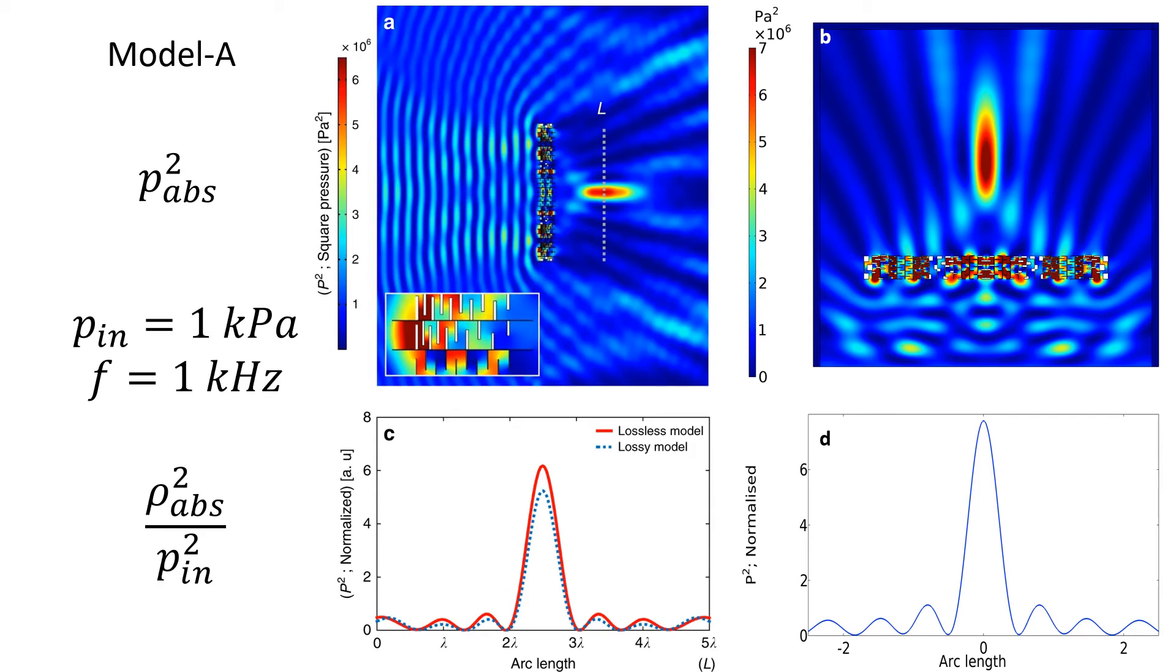The fluctuation of absolute pressure squared, normalized by the square of the input pressure, was probed along the cut line located at two wavelengths away. The pressure at the focal point was found to be approximately 2.7 times greater than the input amplitude.